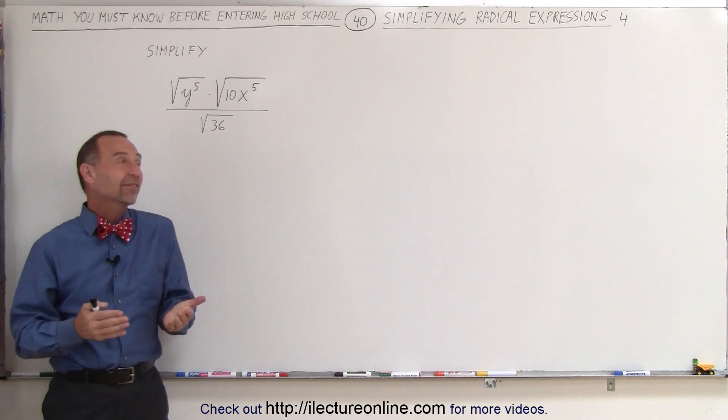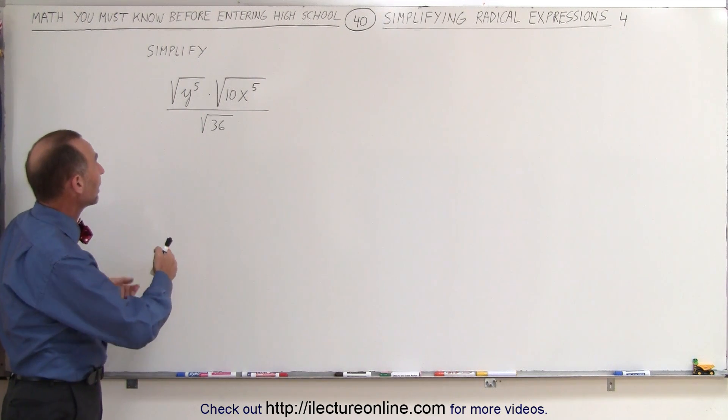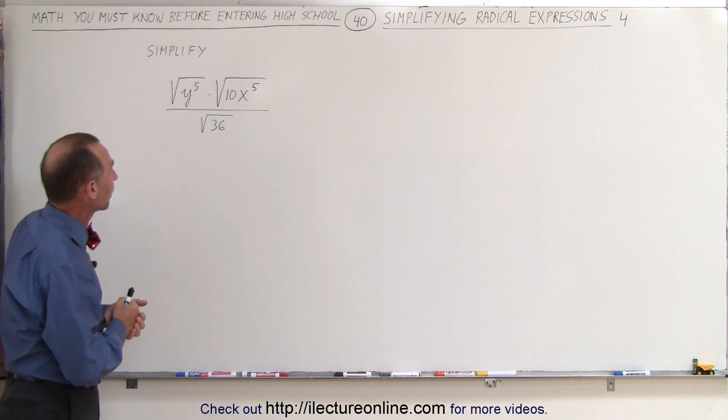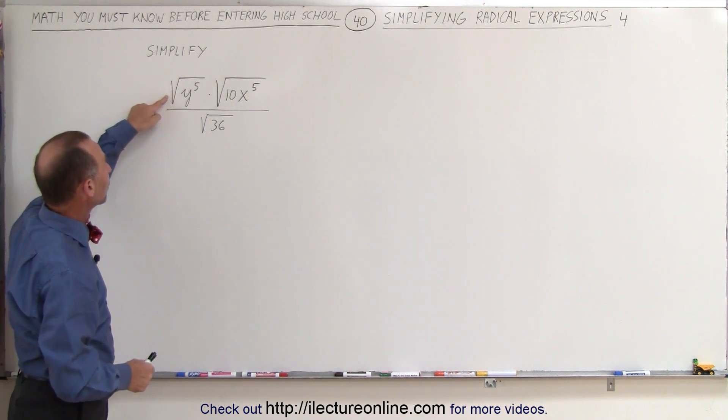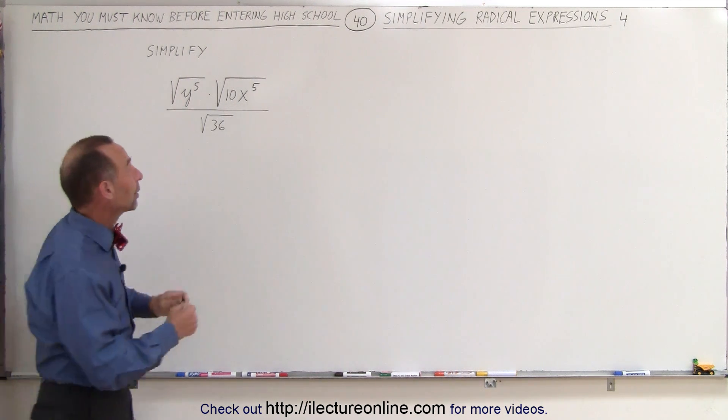Welcome to Electron Line. Here's our next example of how to simplify radical expressions. Here we have the square root of y to the fifth that can be rewritten as follows.